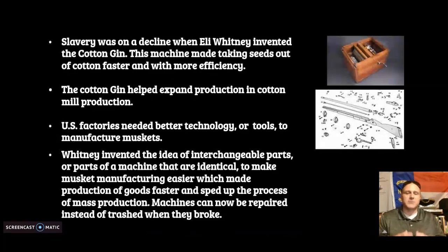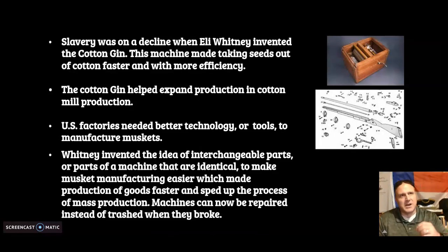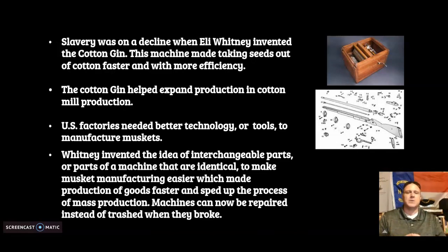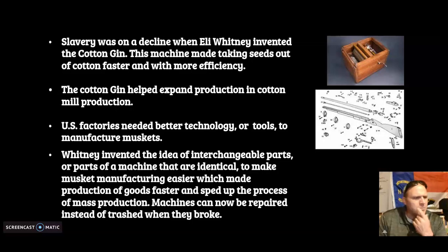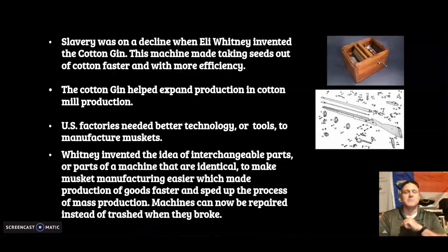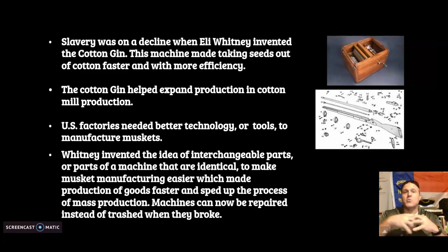The Industrial Revolution started in textiles, but the biggest effect on the world — especially the United States — is Eli Whitney. Up until Eli Whitney, slavery was on a decline. One slave working 10 to 12 hours a day could produce about one to two pounds of cotton, and slave owners weren't making much money. Eli Whitney invented the cotton gin, a machine that rakes the seeds out of the cotton, making it a much faster and more efficient process — faster, cheaper, more efficient.